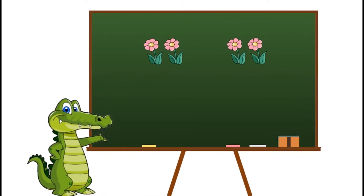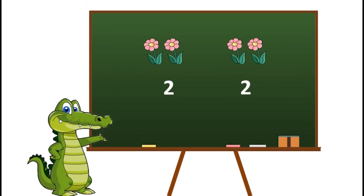Now in this example we have one, two flowers on the left hand side and one, two flowers on the right hand side. As we have the same number of flowers on both sides, we will put an equals to sign and we will say that two is equals to two.